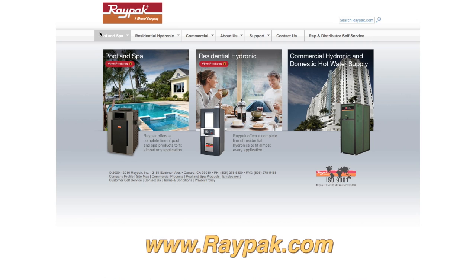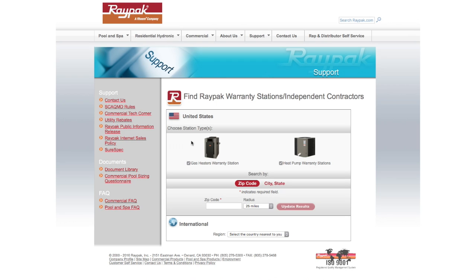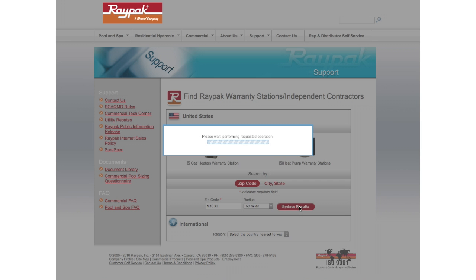You can find a qualified repair company by visiting our website at www.raypac.com and clicking on the Pool and Spa tab at the far left. Select Service from the drop-down menu, type in your zip code and select the radius, then click Update Results.